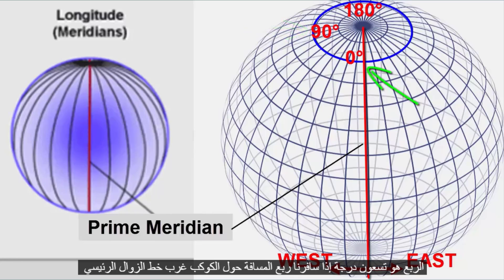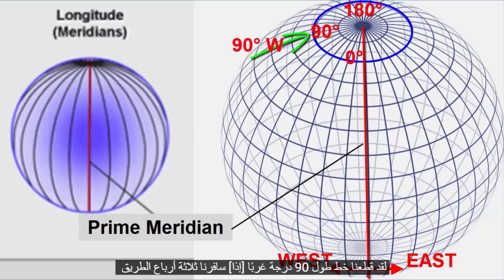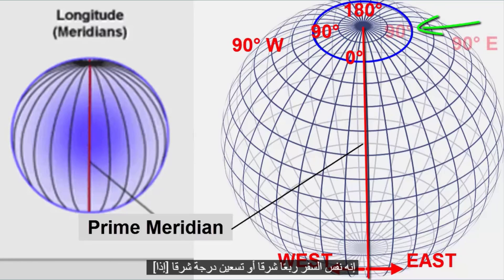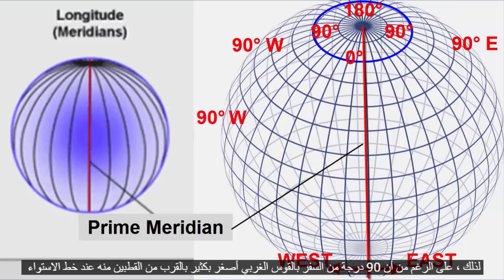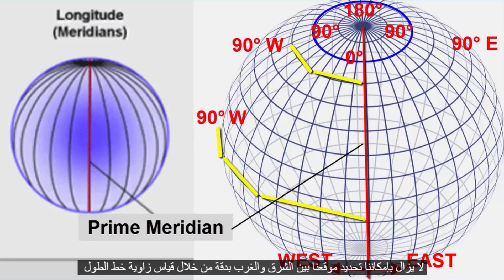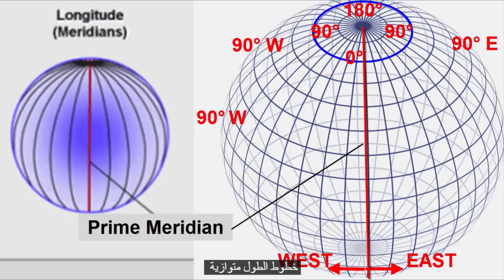If we travel one-quarter of the way around the planet west of the prime meridian, we have traveled 90 degrees west longitude. If we travel three-quarters of the way, it's the same as traveling one-quarter east, or 90 degrees east. If we travel all the way to the opposite side, we're at 180 degrees east or west. So even though 90 degrees of western arc travel is much smaller near the poles than it is at the equator, we can still accurately locate our east-west position by an angle measurement of longitude.